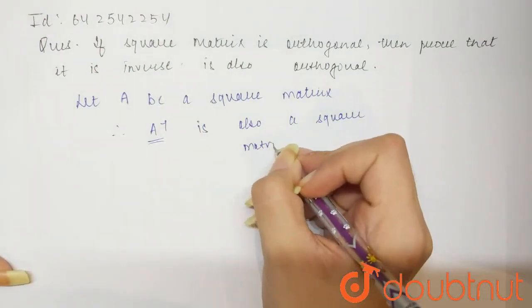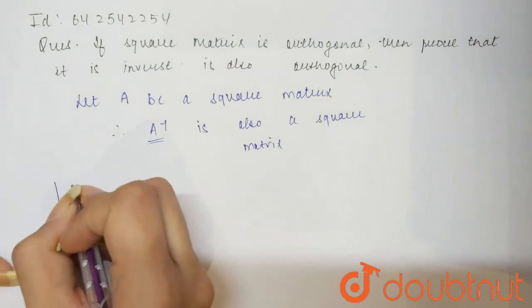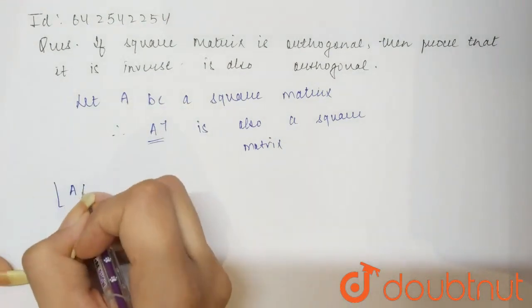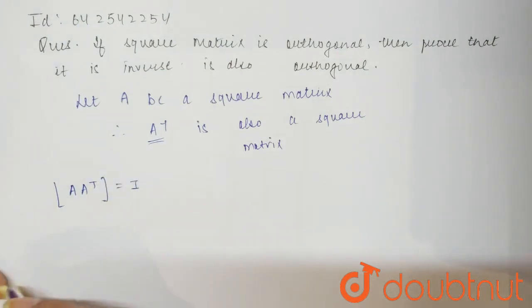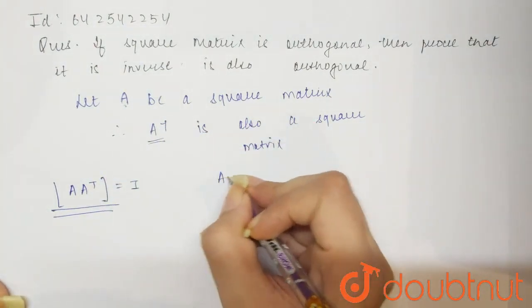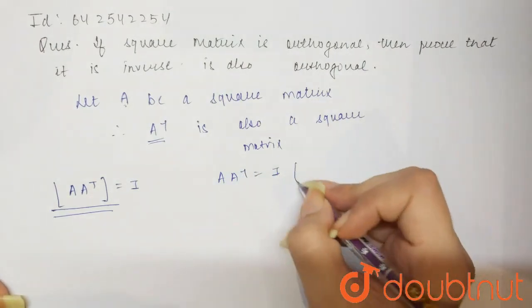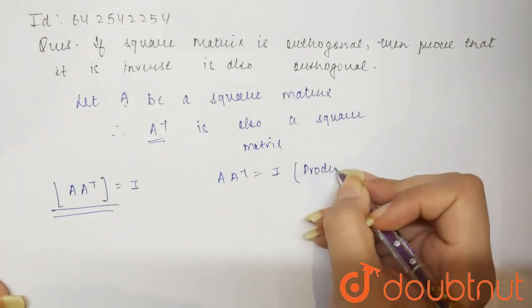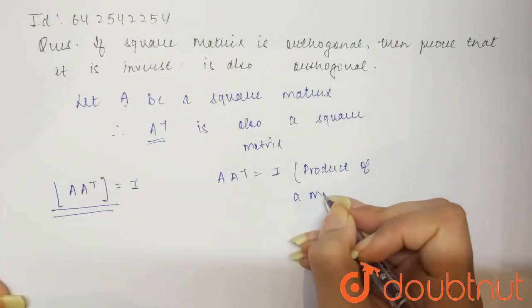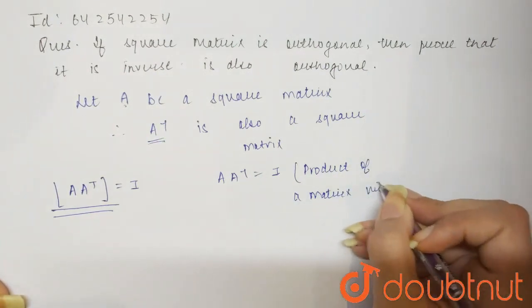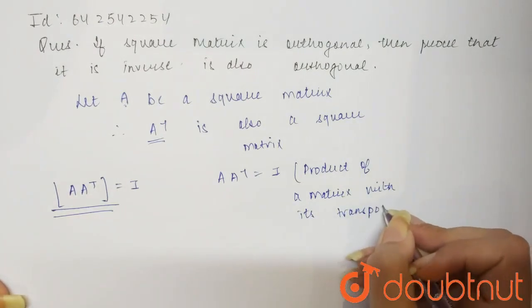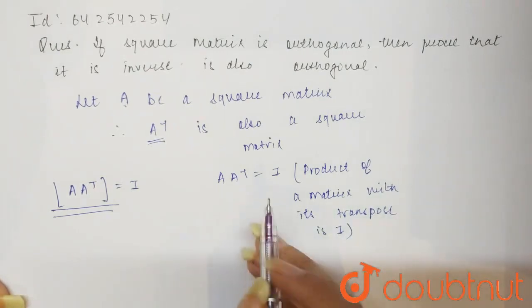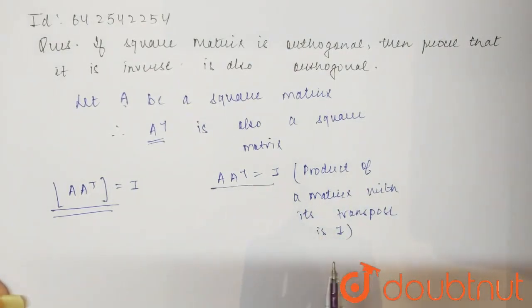Now you know that if any matrix is multiplied by its transpose itself, then the answer will be identity matrix. So you will use this equation. When A into A T will come out to be I, because product of a matrix with its transpose is I. So by using this property, we can say A A T equals I.